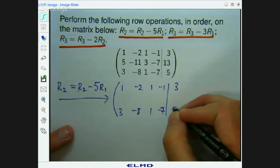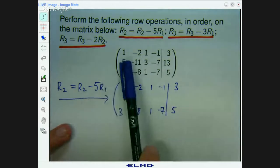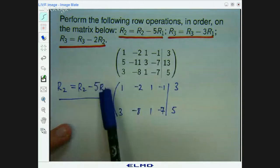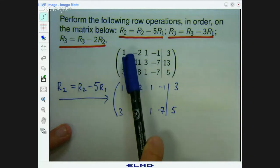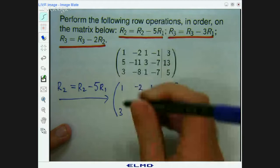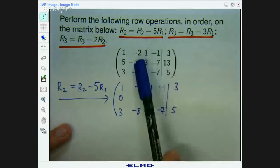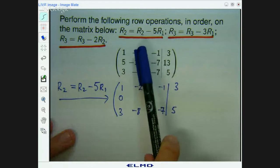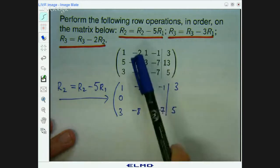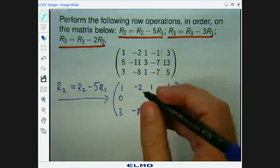Okay, it's negative 7. And, okay, so you do this in a component-wise fashion. Row 2 equals row 2 minus 5 row 1. So it's this minus 5 times the entry above it. So it's 5 minus 5 times 1, which is 0. Negative 11 minus 5 times negative 2. So that's negative 11 plus 10, which is negative 1.